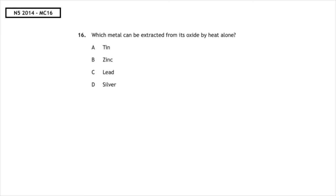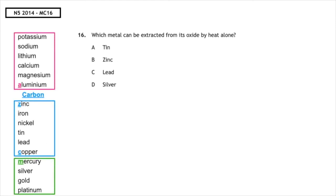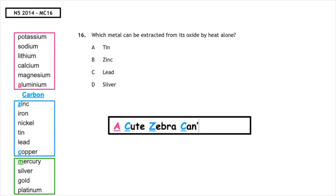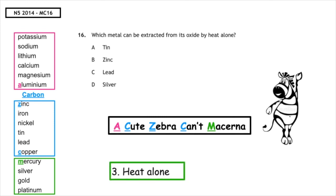This past paper question is from the National 5 2014 multiple choice 16. Which metal can be extracted from its oxide by heat alone? Remember, A Cute Zebra Can't Macarena. We're looking for mercury and below. And the only metal which is found in that section is silver. So the correct answer to this question is multiple choice answer D.